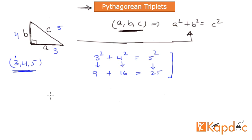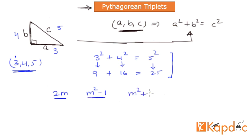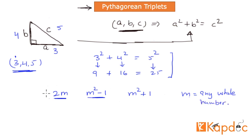The method for that is: Pythagorean triplets will always follow this principle, in which one number will take the form 2m, the second number will be m squared minus 1, and the third number will be m squared plus 1, where m is any whole number. That is crucial for this triplet to hold this property.